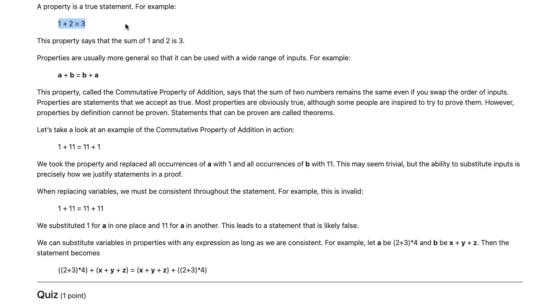Properties are usually more general so that it can be used with a wide range of inputs. For example, a plus b equals b plus a is a property called the commutative property of addition.